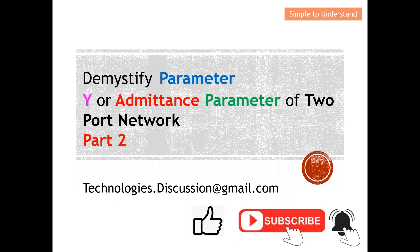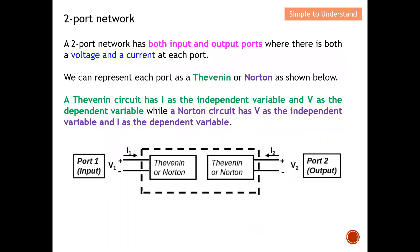Before I start on Y or admittance parameters, let's do a very quick discussion on two-port networks. A two-port network basically has both input and output ports — typically input is on the left and output is on the right. There is both a voltage and a current at each port. We can represent each port as a Thevenin or Norton equivalent, as shown below.